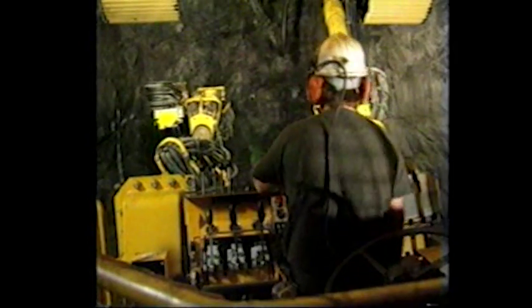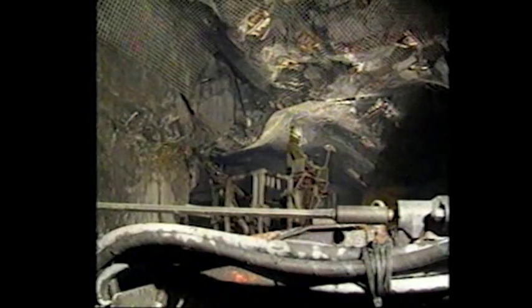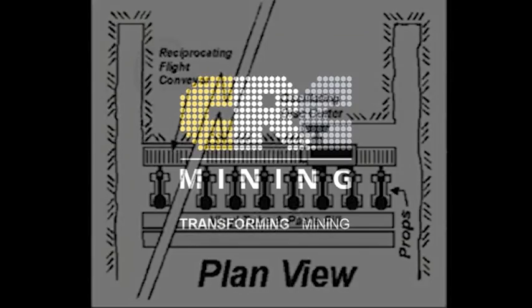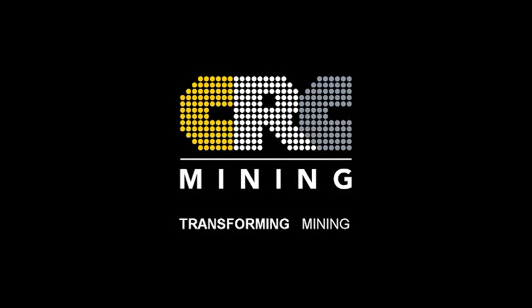Hard rock mining by the traditional drill and blast method is slow, expensive and hazardous. The oscillating disc cutter offers a practical alternative for a true continuous hard rock mining system. In thin tabular deposits such as the South African gold reefs, drill and blast stopes can be replaced by self-advancing long wall faces. This method should lead to production rates ten times higher than those currently experienced, and that definitely represents a quantum leap forward in rock excavation technology.